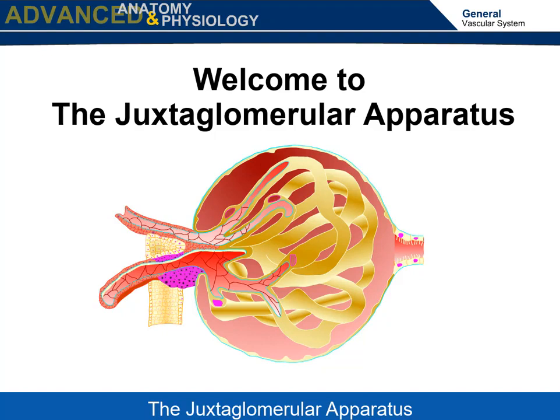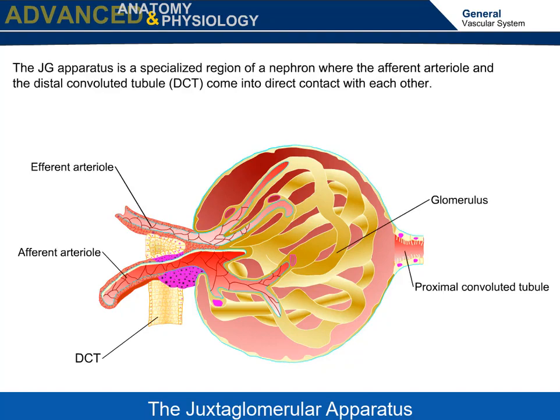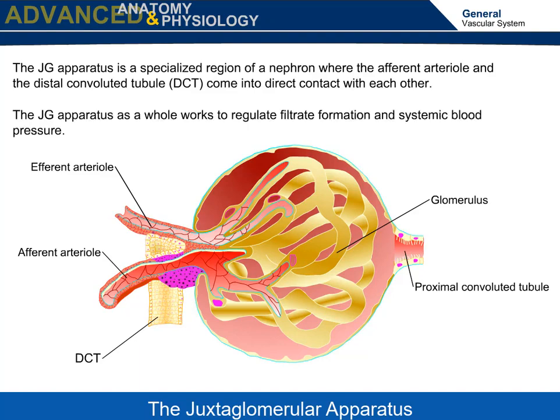Welcome to the juxtaglomerular apparatus. In this video you will examine the location, structure, and function of the juxtaglomerular apparatus. The JG apparatus is a specialized region of a nephron where the afferent arteriole and the distal convoluted tubule come into direct contact with each other. The JG apparatus as a whole works to regulate filtrate formation and systemic blood pressure.